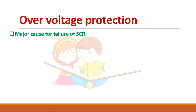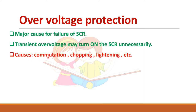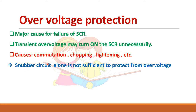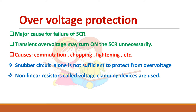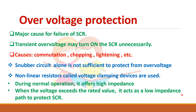Overvoltage is the major cause of failure in SCR and may turn on the device unnecessarily. There are various causes — both internal and external. The snubber circuit can be used for dV/dt protection but it is not sufficient for overvoltage protection. So you have to use non-linear resistors called voltage clamping devices. These have special characteristics: when voltage is at normal level they offer a high impedance path, and when the voltage exceeds the rated value they offer a low impedance path to protect the SCR. These non-linear resistors are connected across the SCR.